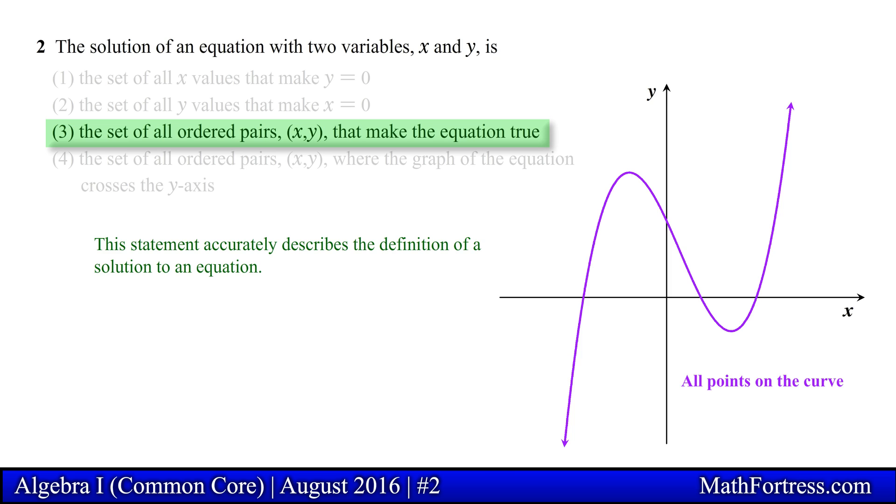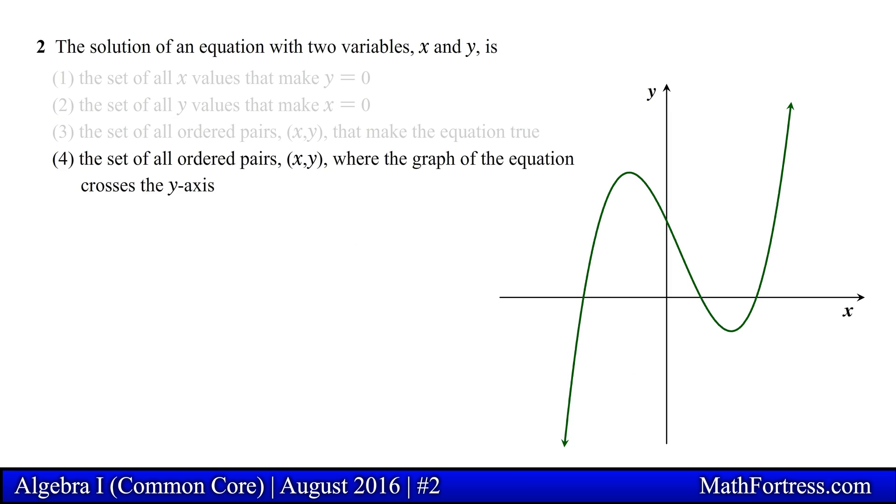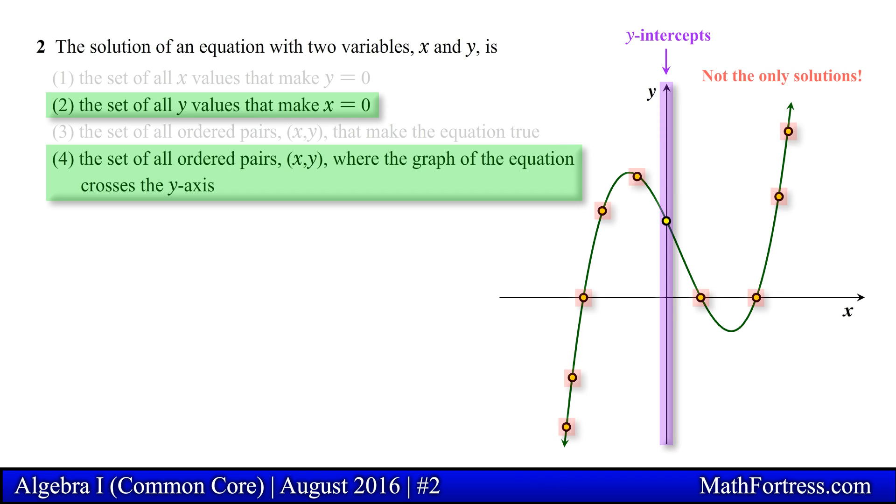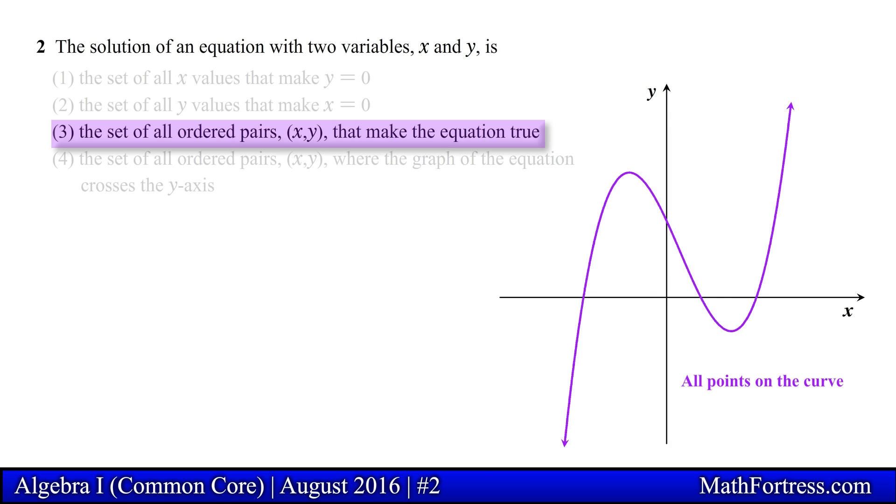Before we decide to choose this option as our answer let's take a look at option 4. This option reads, the set of all ordered pairs (x,y) where the graph of the equation crosses the y axis. This statement is essentially the same as that of option 2, it is stating that the solution to an equation are the y-intercepts. Again these are not the only points that make the equation true, you also have all the other points located on the curve of the equation. So option 3 fits this definition.